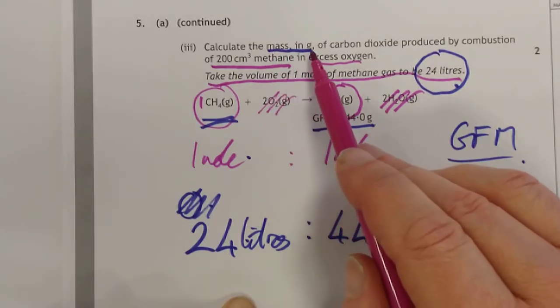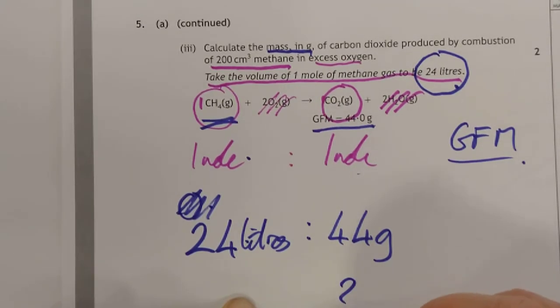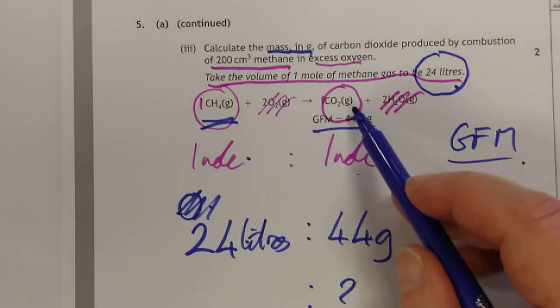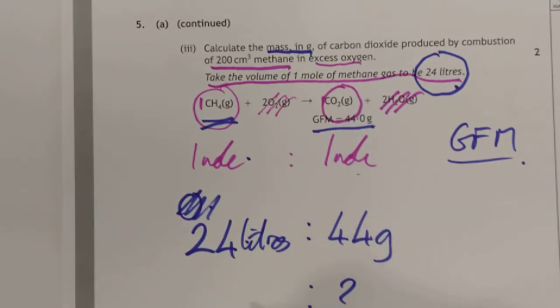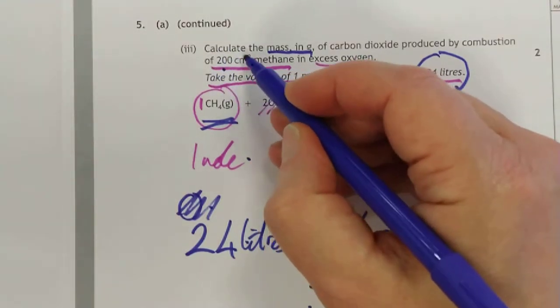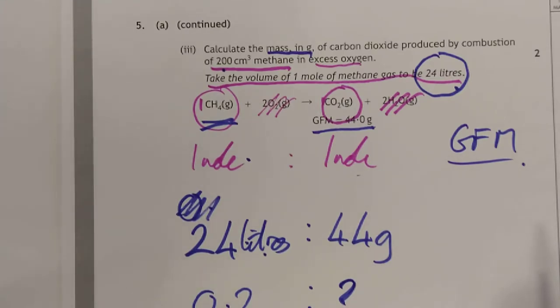What we do now is we place an unknown in the correct column. We're looking for a mass in grams of carbon dioxide. Here's the carbon dioxide column. Let's pop a question mark here. And the only thing that's missing is the number here, which we'll associate with this. 24 litres of methane would make 44 grams of carbon dioxide. Can you tell me what goes here? It's this. But we have to turn it into litres because that's litres. So let's turn that into 0.2.